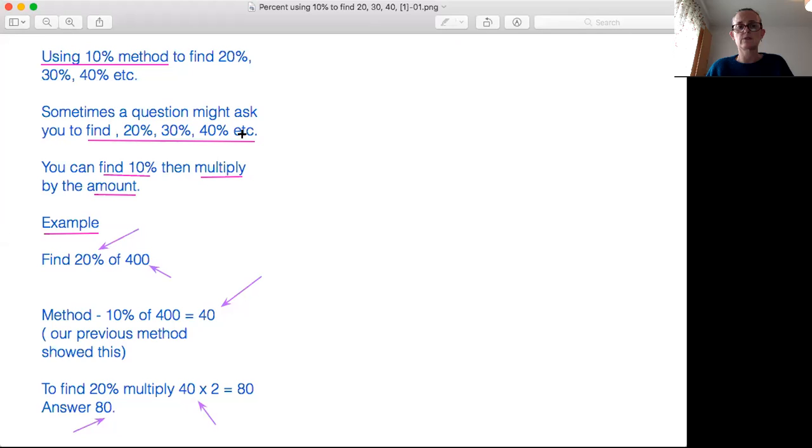And what you can do is you can find 10% which we know is divided by 10, then multiply by the amount. So let's look at our example here. Find 20% of 400.